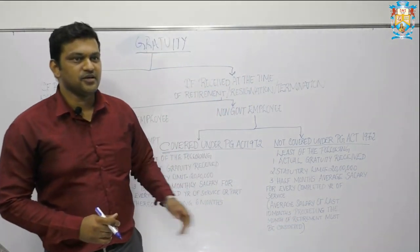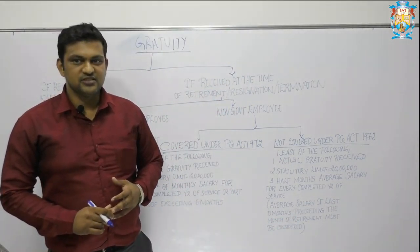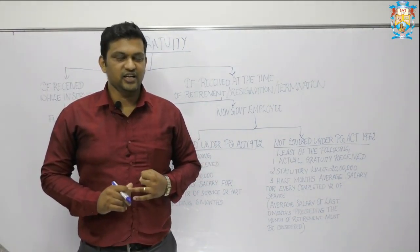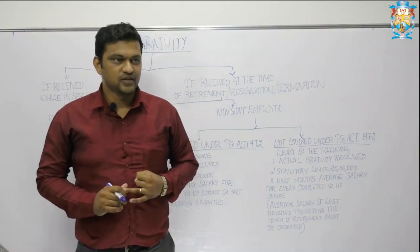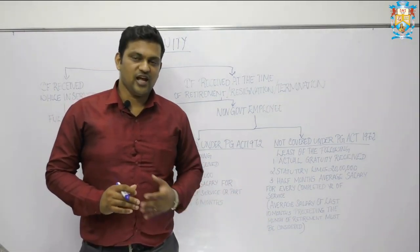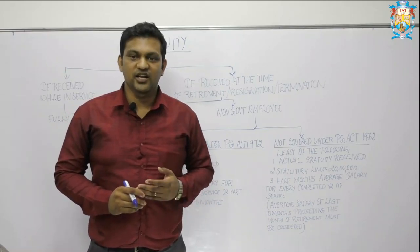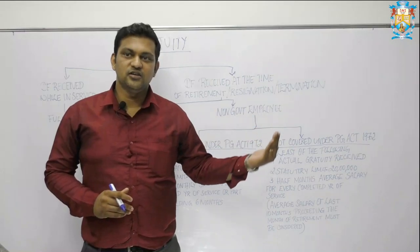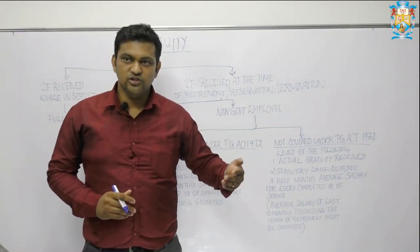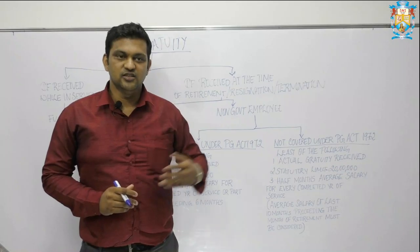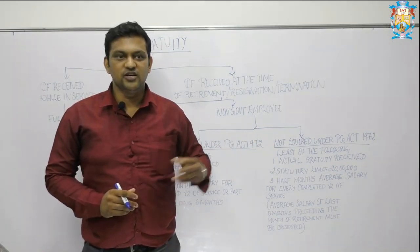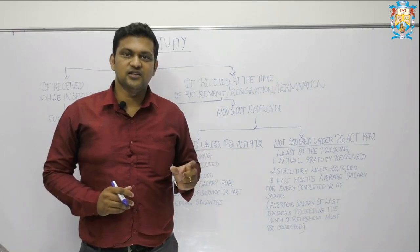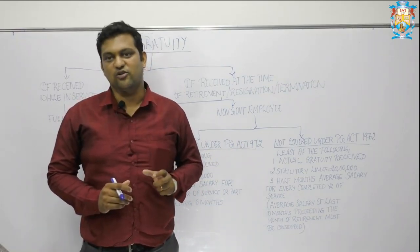For example, if a person retires in the month of November, then November will not be taken into consideration. It will be from October, September, August up to January — ten months we are supposed to consider. So January to October will be taken as ten months, whereas the month of retirement will not be considered for calculation.